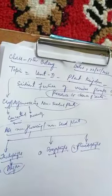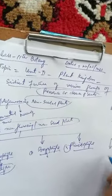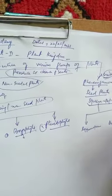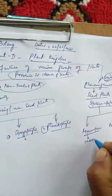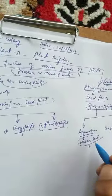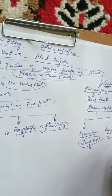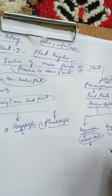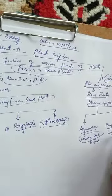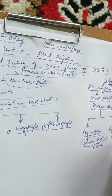Phanerogamae have been further divided into two divisions: Gymnosperms and Angiosperms. 'Gymno' means naked and 'sperms' means seeds — the group of seed plants in which seeds are naked are called Gymnosperms. 'Angio' means covered and 'sperms' means seeds — the group of Spermatophytes in which seeds are covered are placed in Angiosperms. Gymnosperms have naked seeds, but Angiosperms have covered seeds.